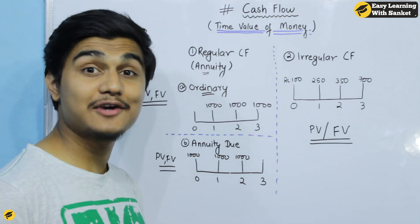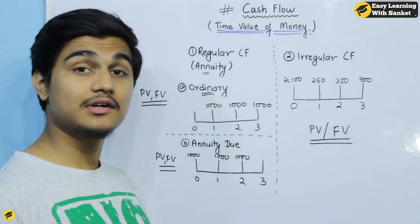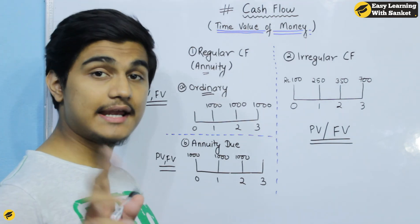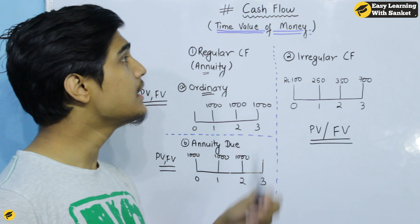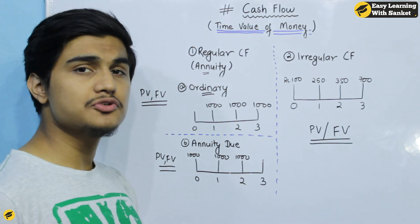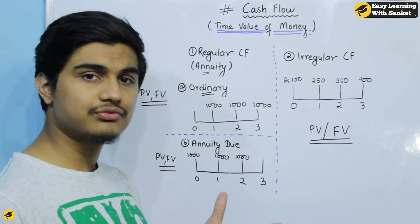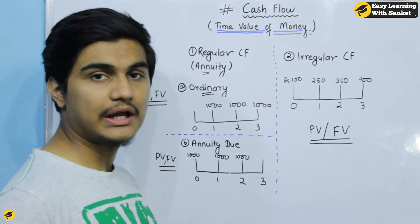Hello there, welcome back to Easy Learning Sanketra. This is the second part of Time Value of Money — specifically cash flow and annuity (NUT).